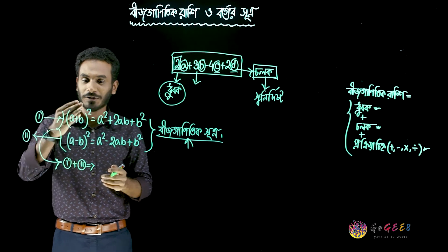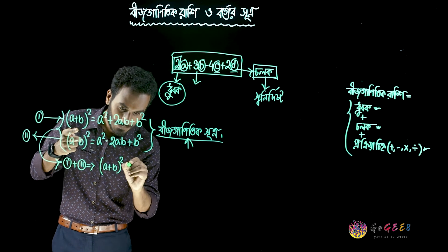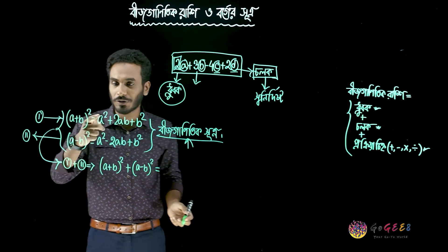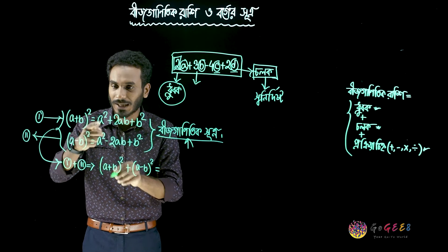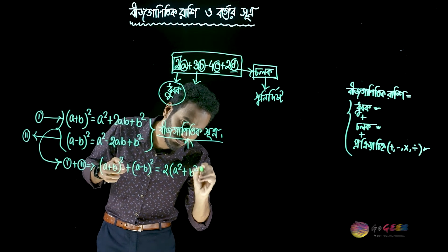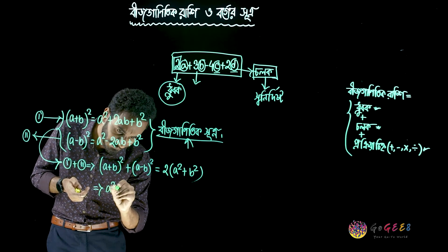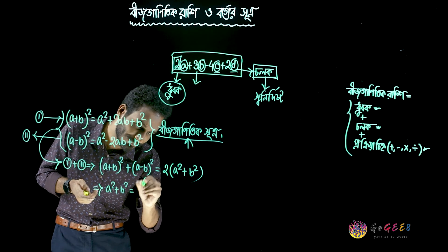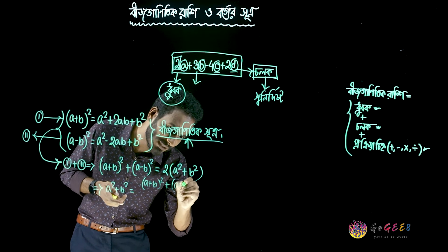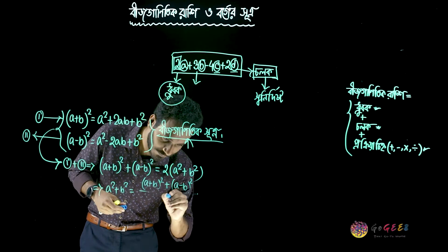So the two components — we just add two rows, then we add a plus b squared plus a minus b squared. We combine them to get: a squared plus b squared equals a plus b whole square plus a minus b whole square, divided by 2.